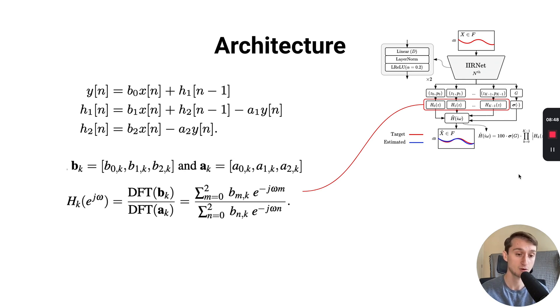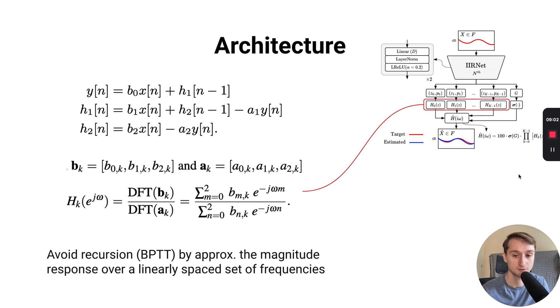So instead, we use this approach similar to the frequency sampling method. In this case, we simply take the DFT of the numerator and denominator coefficients and divide them to get an approximation of the response of the filter at a set of linearly spaced frequencies given by the DFT. We can implement this on GPU hardware very efficiently with the FFT. As we increase the zero padding we apply to the numerator and denominator coefficients, we get closer to the actual response of this filter. This gives us a huge benefit beyond just being able to run it on the GPU efficiently, but also that we can avoid backpropagation through time and approximate this response over any number of linearly spaced frequencies that we desire. After we've estimated those magnitude responses, we simply use a very simple loss function like the mean squared error of the log of both the estimated and target responses.